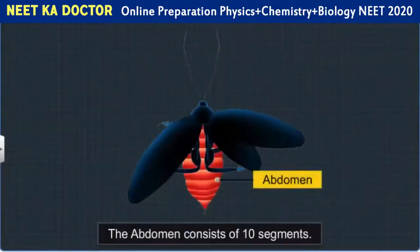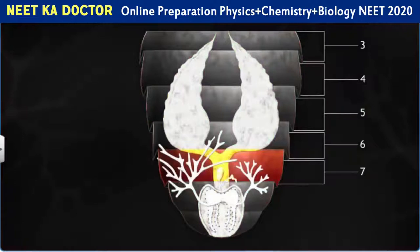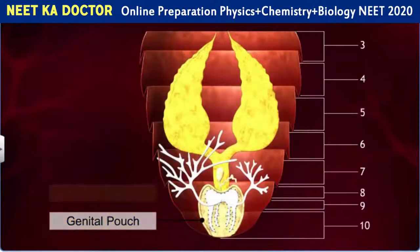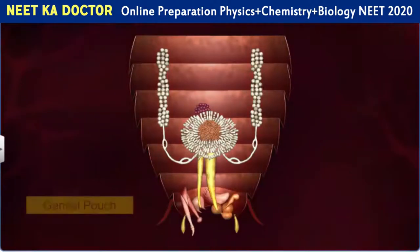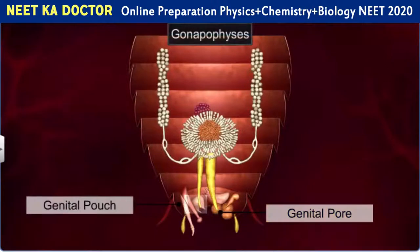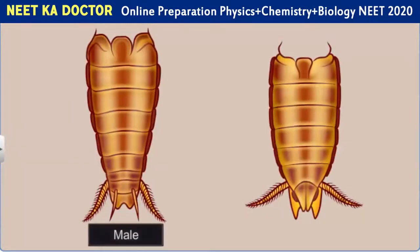Following the thorax is the abdomen, which consists of ten segments. Although the male and female cockroaches have an equal number of abdominal segments, the female's abdomen is broader than that of the male. In females, the seventh sternum is boat-shaped and together with the eighth and ninth sterna forms a genital pouch, which contains the female gonopore, spermathecal pores and collateral glands. In males, the genital pouch lies towards the end of the abdomen and contains the dorsal anus, the ventral male genital pore and the gonopophysis. The genital pouch is surrounded dorsally by the ninth and tenth terga and ventrally by the ninth sternum. The tenth segment of both male and female cockroaches bears a pair of jointed filamentous anal cerci that function as sense organs.